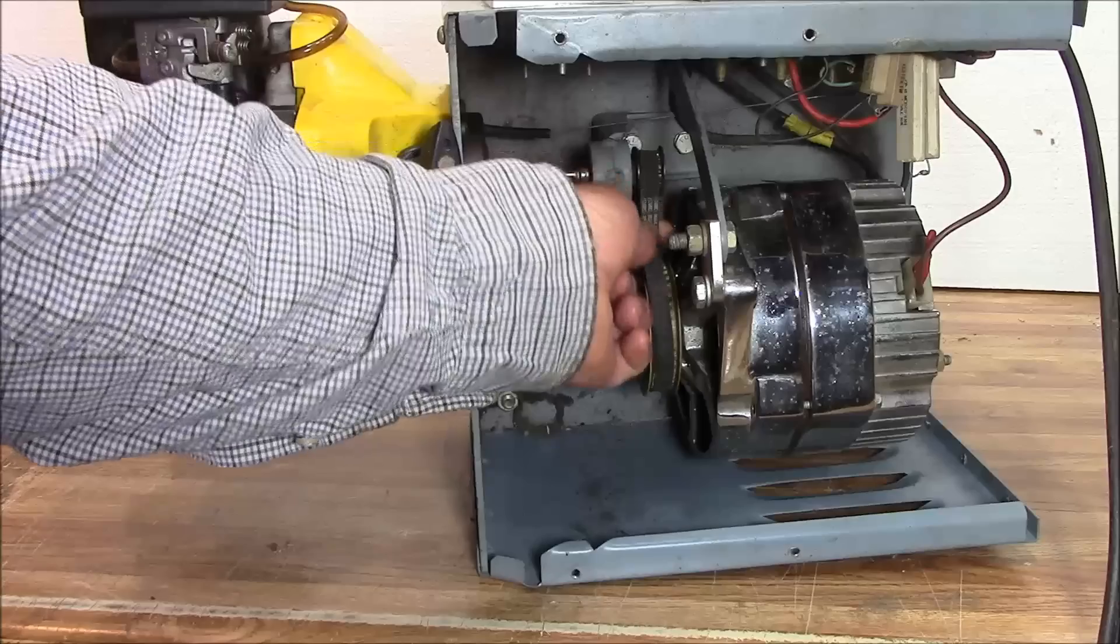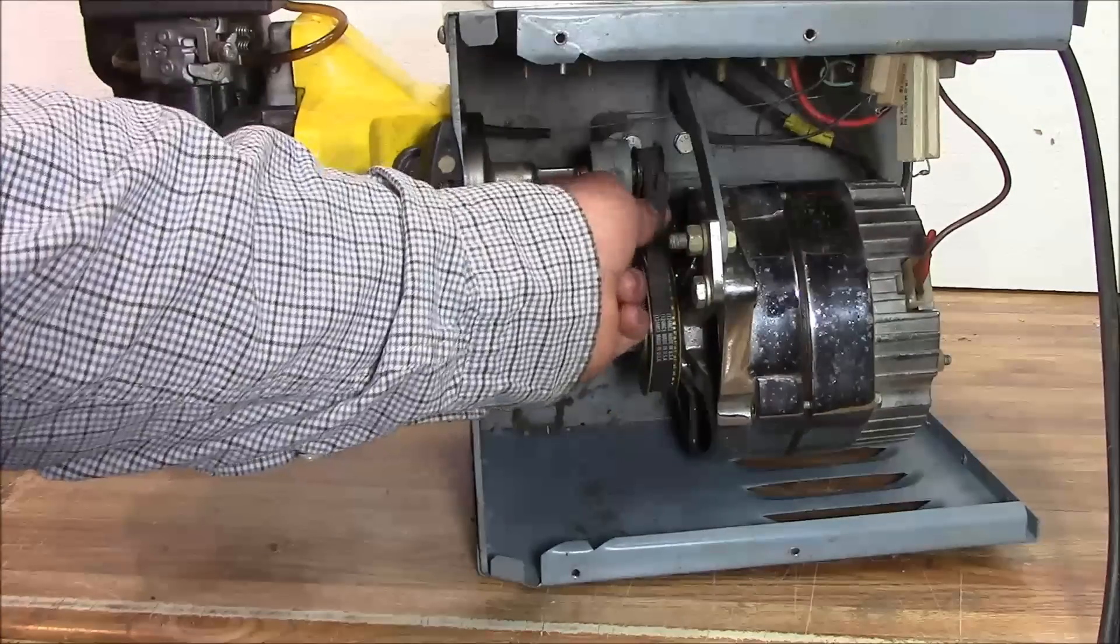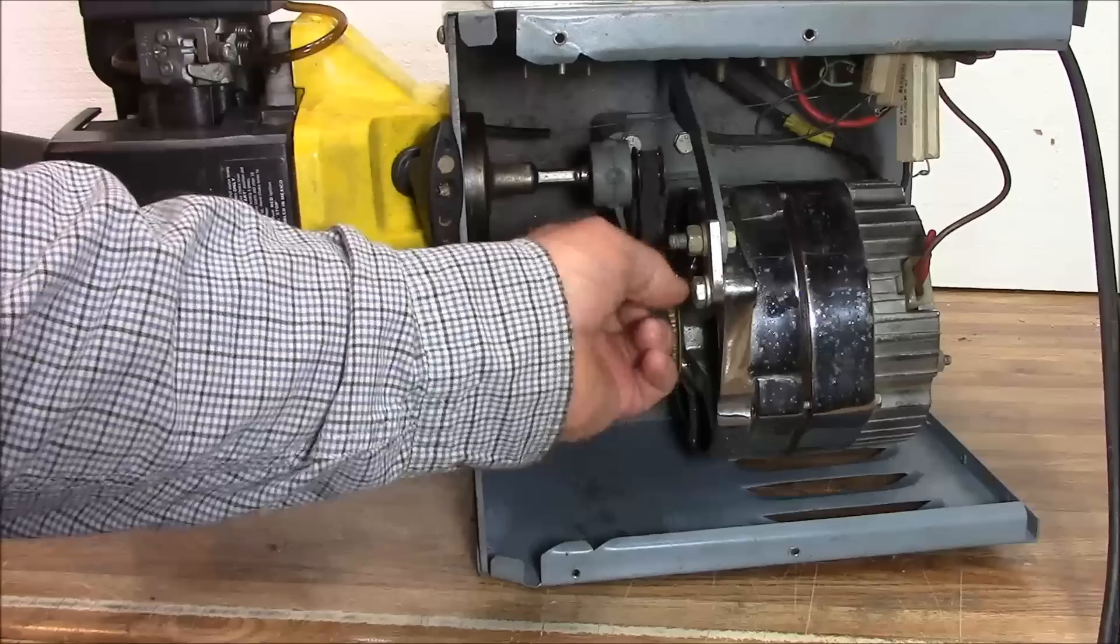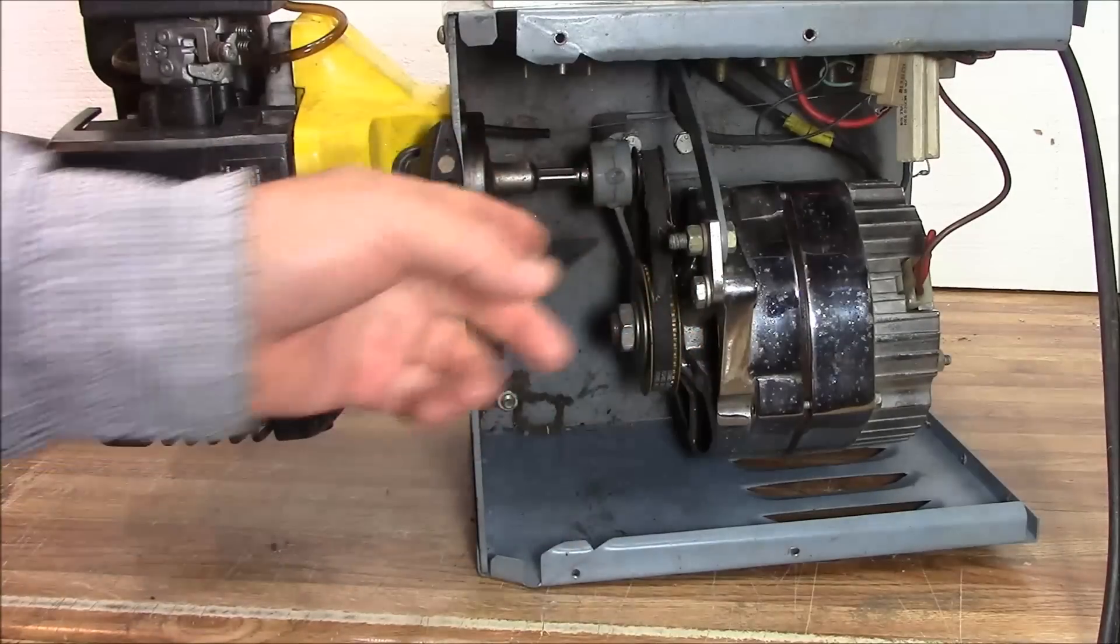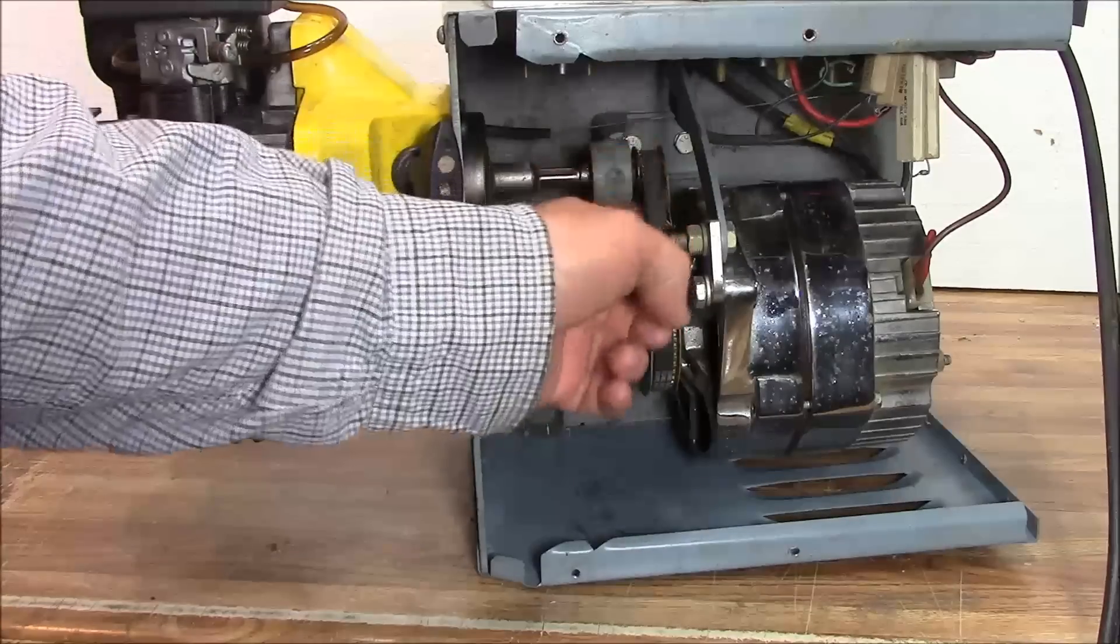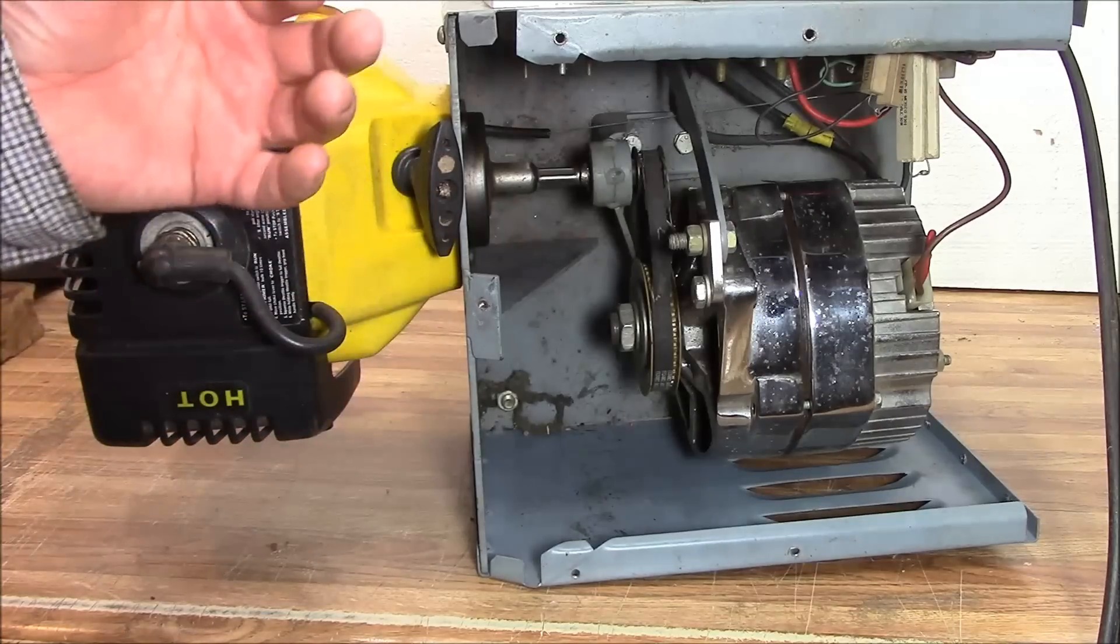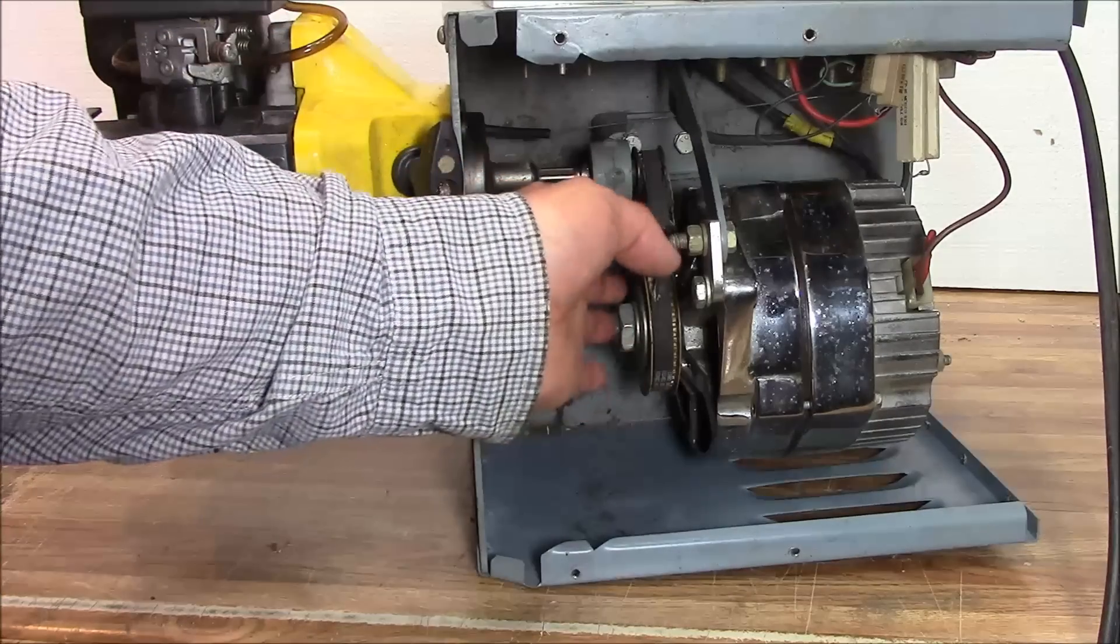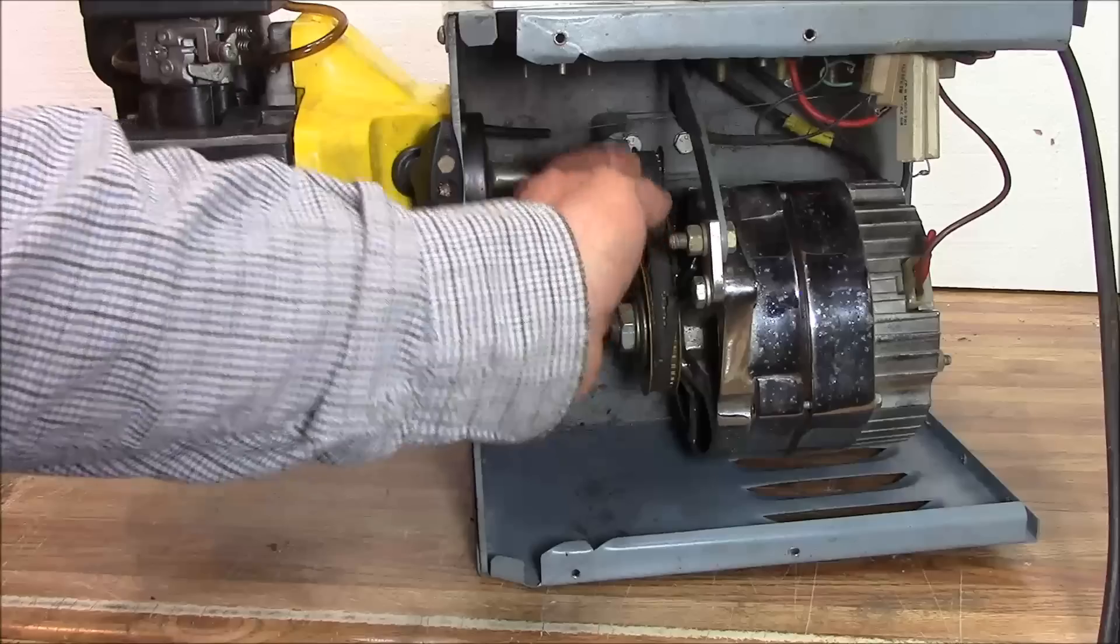This setup, this little three-eighths wide timing belt, you can see it blew out the belt right here, just totally blew out. This little 5/8 pulley was just so much of a bend, so much torque and everything that it just ripped it out.